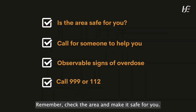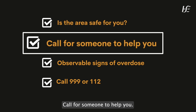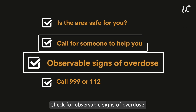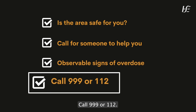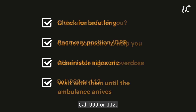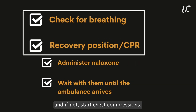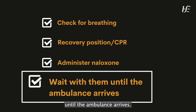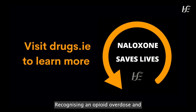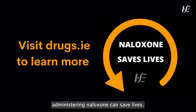Remember: check the area and make it safe for you; call for someone to help you; check for observable signs of overdose; call 999 or 112. If they are breathing, put them into the recovery position. If not, start chest compressions, administer naloxone, and wait with them until the ambulance arrives. Recognising an opioid overdose and administering naloxone can save lives.